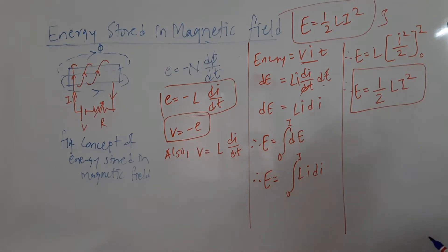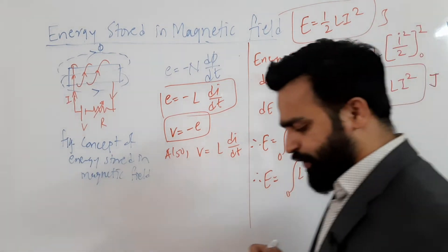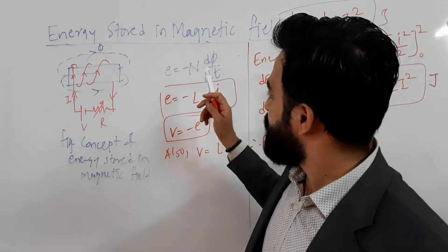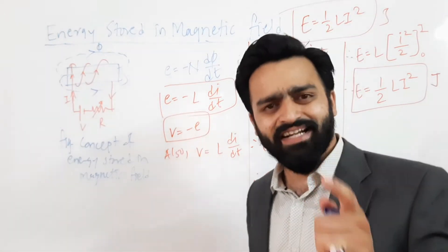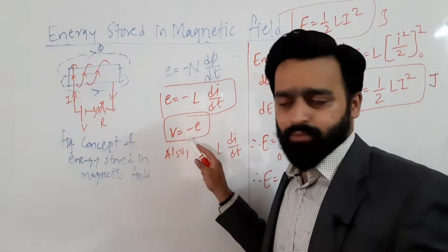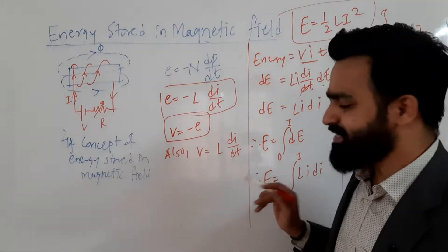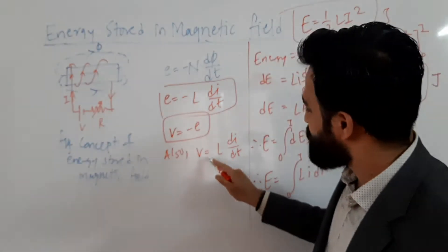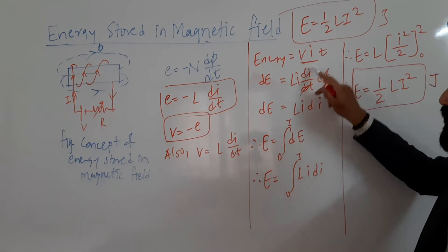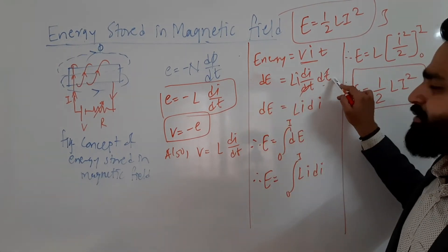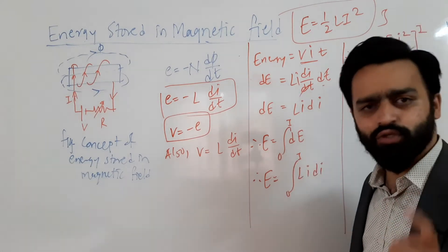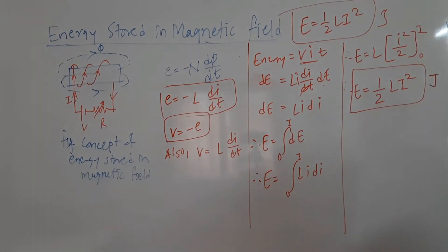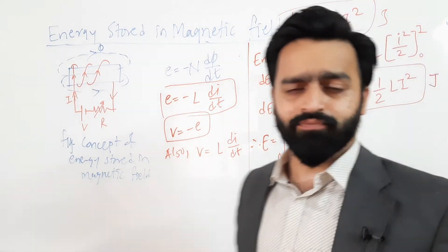To summarize the derivation: the induced EMF always opposes the cause responsible for its production, so the source has to put in additional energy to counterbalance the induced EMF, giving V = L·di/dt. Using E = V·I·t, substituting V, cancelling dt, and integrating from 0 to I, we arrive at E = (1/2)·L·I², the energy stored in the magnetic field.